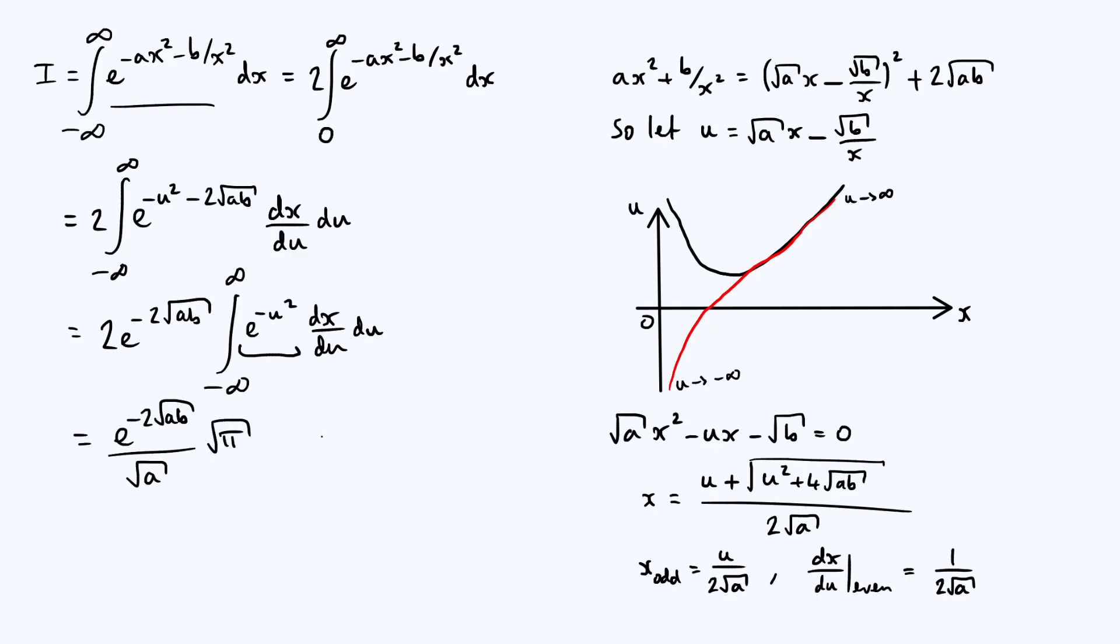And then we just tidy things up a little bit, and we get e to the minus 2 root ab times the square root of pi over a, which is in perfect agreement with the expression that we got last time using differentiation under the integral sign.